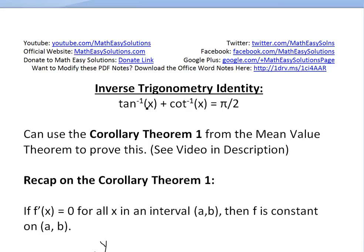Let's discuss another inverse trigonometry identity. We want to show that inverse tangent of x plus inverse cotangent of x equals π over 2.